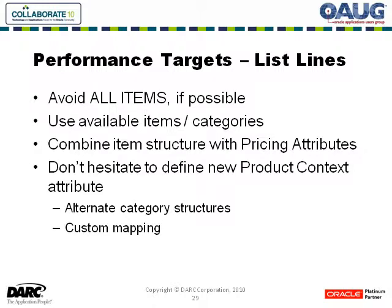When defining the item that a given list line represents, recall you can specify it at the item number level, the product category level, or the highest level — all items. Avoid using all items if possible, because every call to the pricing engine for a specific order line will grab every all-items list line that's out there, because it will always qualify.